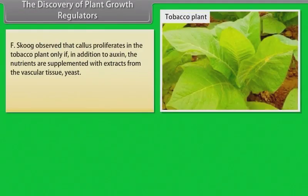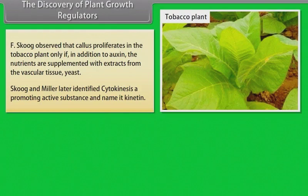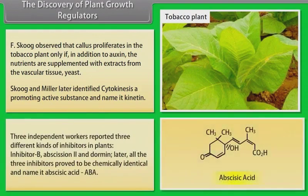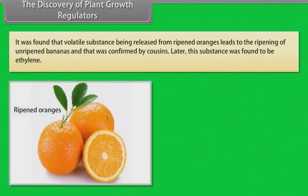F. Skoog observed that callus proliferates in tobacco plants only if, in addition to auxin, the nutrients are supplemented with extracts from vascular tissue or yeast. Skoog and Miller later identified a cell-division-promoting active substance and named it kinetin. Three independent workers reported three different kinds of inhibitors in plants — inhibitor B, abscission-2, and dormin. Later, all three inhibitors proved to be chemically identical and were named abscisic acid (ABA). It was found that a volatile substance released from ripened oranges leads to the ripening of unripened bananas, as confirmed by Cousins. This substance was later found to be ethylene.